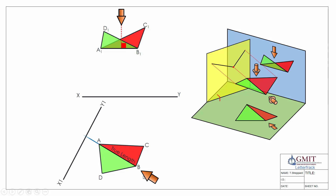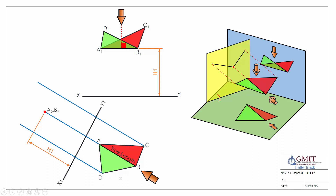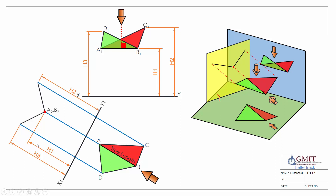Looking along the line of intersection AB, we transfer our heights from the elevation and mark them off the X1Y1 line, following the one-two rule from our previous videos. This gives us the point view of our line of intersection A2B2. We do the same with points D and C, taking heights from the elevation to give us the edge view of the two planes, and we've located our dihedral angle.